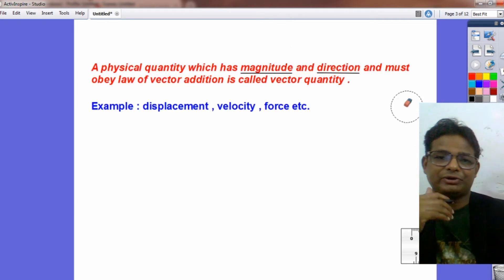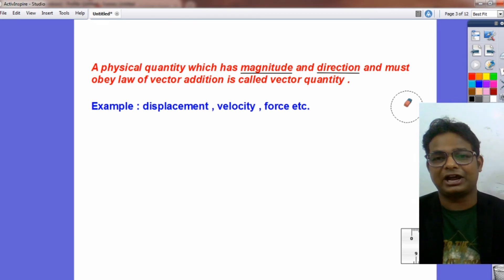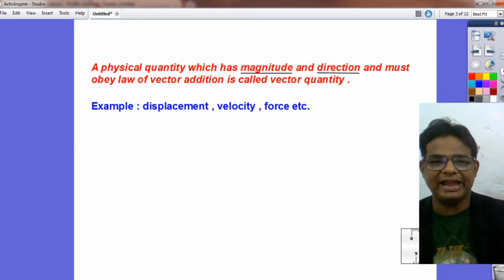So students, it's time to start. Today I want to talk about vectors. The vector quantity may be defined as a physical quantity which has magnitude and direction and must obey law of vector addition is called vector quantity. For example, displacement, velocity, force, etc.